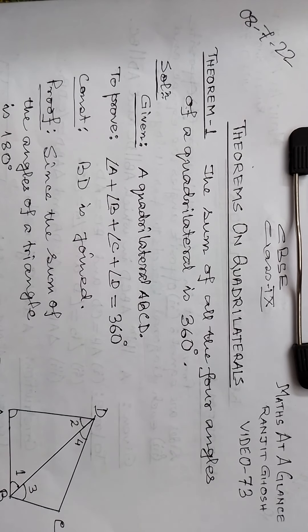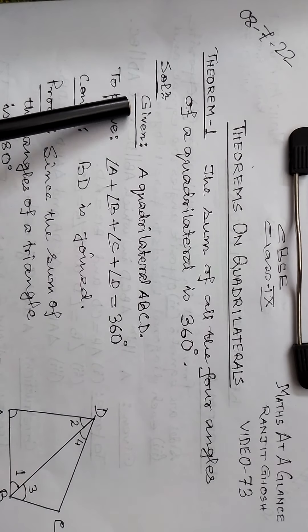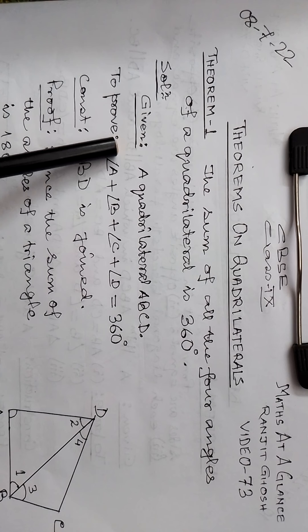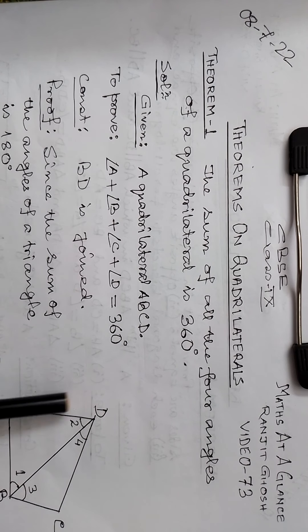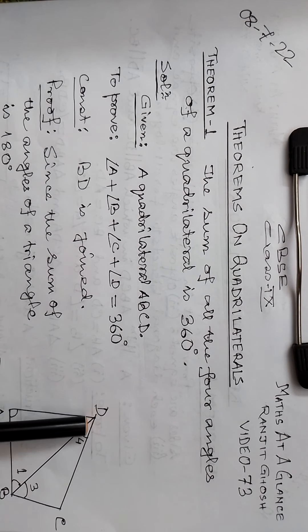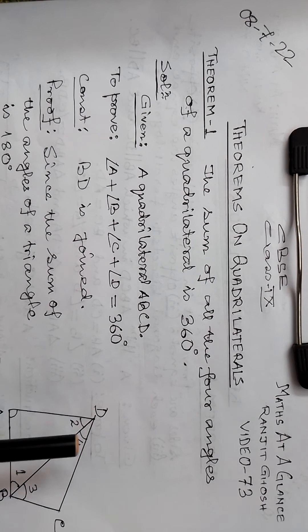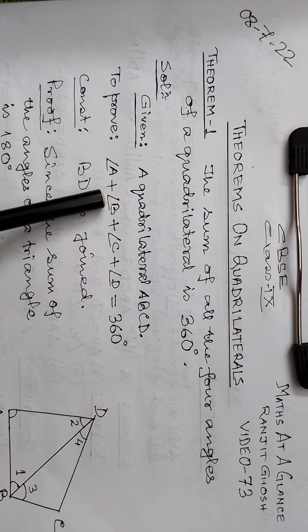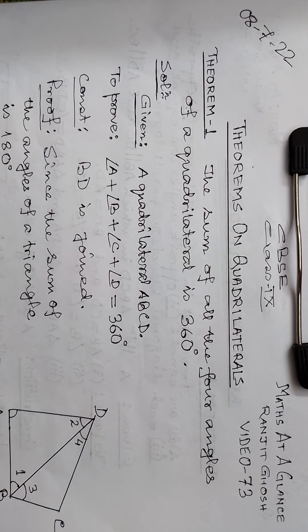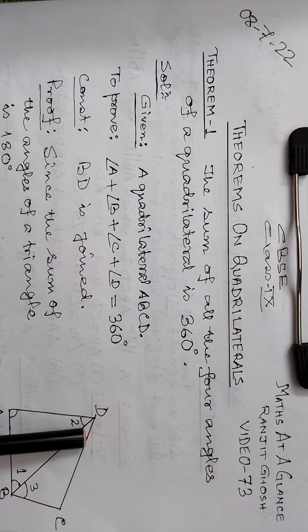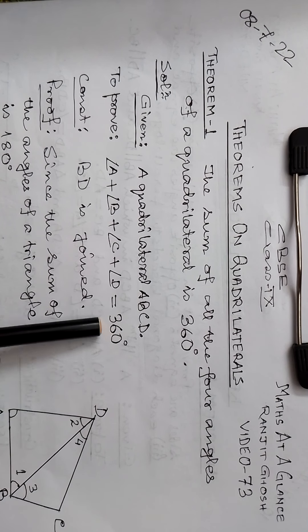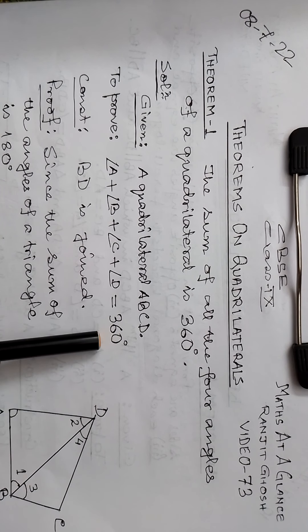Given: quadrilateral ABCD. We will prove that angle A plus angle B plus angle C plus angle D is equal to 360 degrees.